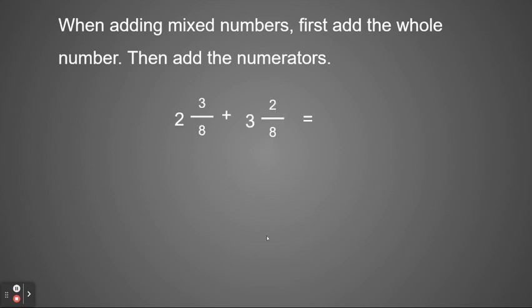Here are some examples. If I have two and three eighths plus three and two eighths, I'm going to start by adding my two whole numbers: two plus three is five. Then, since my denominators are the same, I add my numerators: three plus two is five, so I'll have five eighths. My total would be five and five eighths.